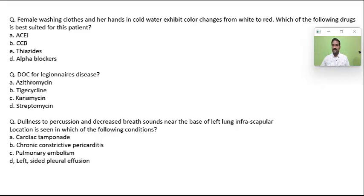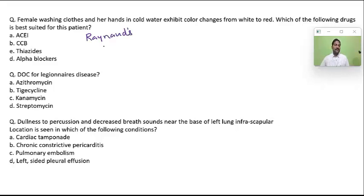A female washing clothes with her hands in cold water exhibits color changes — white to blue to red. Initially white, then cyanotic/blue, then back to normal (red) after removing from the cold. All these are suggestive of Raynaud's phenomenon. The treatment includes calcium channel blockers.